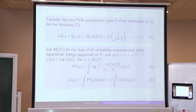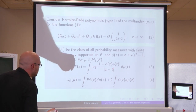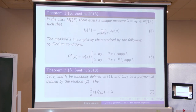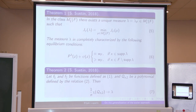We want to estimate the weak asymptotics of the polynomial Q_N^2. Suetin introduced a potential with a specific kernel — note there is a square here — with an external harmonic field. In his 2018 paper, he proved that in the class of probability measures supported on the compact set F, there exists a unique measure minimizing the corresponding energy functional, characterized by the well-known equilibrium conditions, and this measure is the weak-star limit of the counting measure of the polynomial Q_N^2.